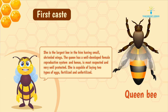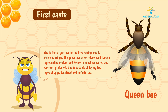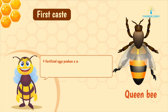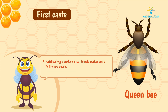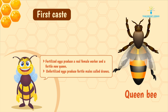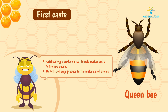She is capable of laying two types of eggs: fertilized and unfertilized. Fertilized eggs produce real female workers and a fertile new queen. Unfertilized eggs produce fertile males called drones.